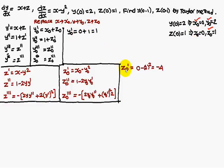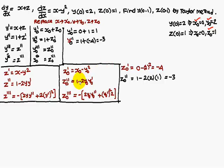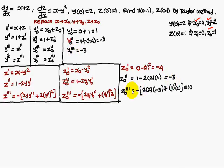Therefore, y naught dash is x naught plus z naught, so 0 plus 1 equals 1. z naught dash means x naught is 0, y naught is 2, so 0 minus 2 squared equals minus 4. y naught double dash is 1 plus z naught dash; z naught dash is minus 4, so 1 minus 4 equals minus 3. z naught double dash: substituting values gives minus 3. y naught triple dash equals z naught double dash, which is minus 3. z naught triple dash: substituting values gives 10. y naught fourth differentiation is 10.